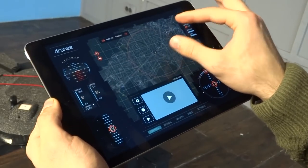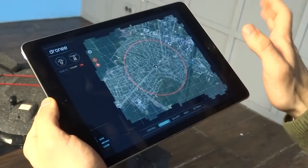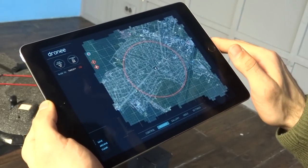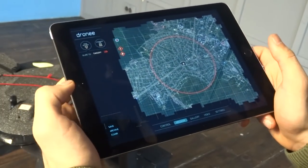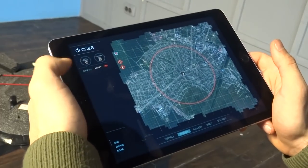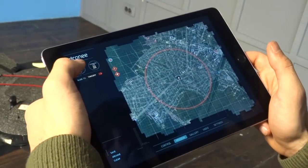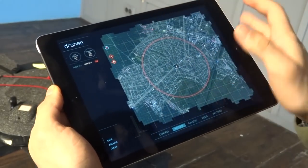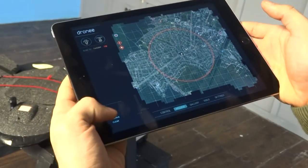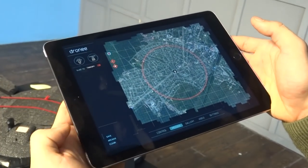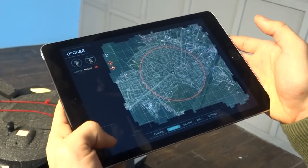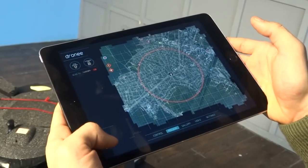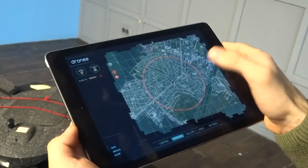The second tab is the mission tab. This tab is specifically designed for surveying applications. On the top left, we have two indicators. Total distance shows the total distance of the mission and estimated time of the mission. On the bottom, we have save, archive, and clear. Saves the mission to the archive, and you can access the saved missions from archive and clear the mission from the screen.